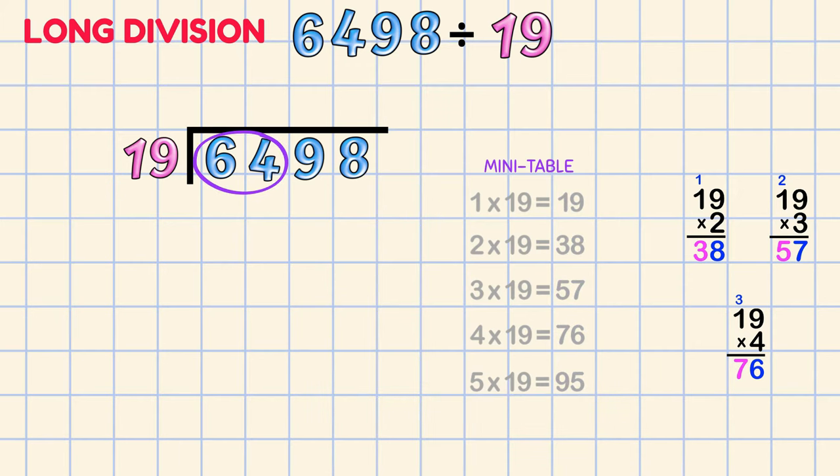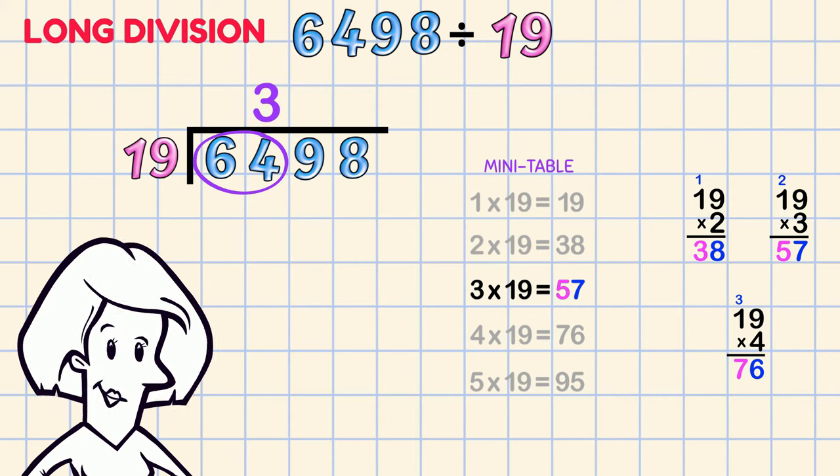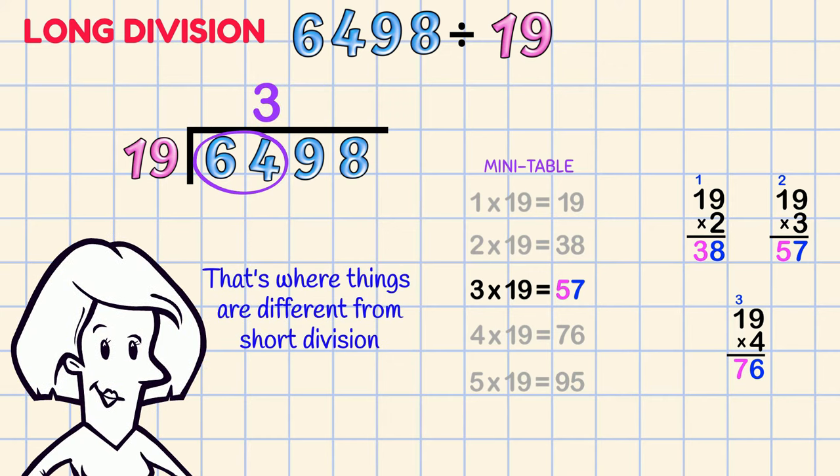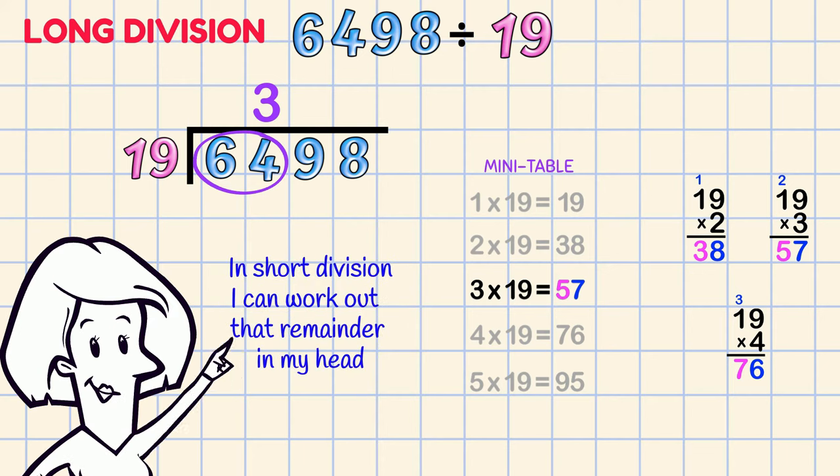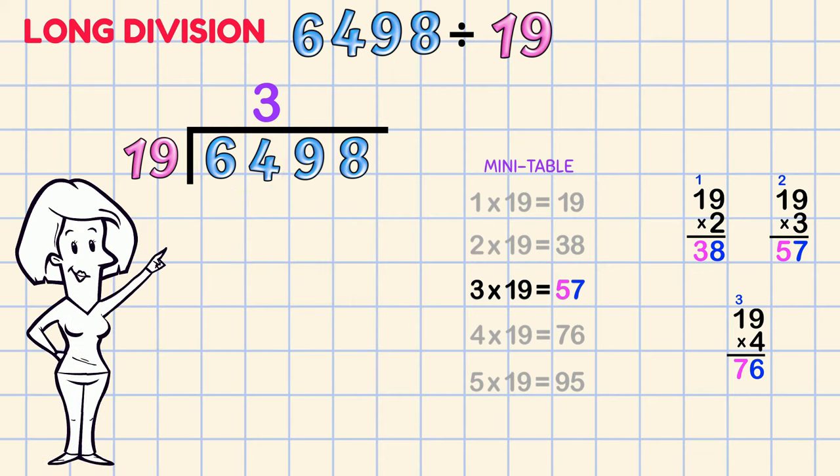How many 19s in 64? Use the mini table! 3 x 19 is 57. Put the 3 on the answer line above the 4. There's a remainder! And that's where things are different from short division. In short division, I can work out that remainder in my head. It goes here,